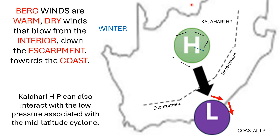So, what exactly is required for the development of bergwinds? The Kalahari High Pressure needs to be present over the interior of the country, and there needs to be a coastal low along the coastline of South Africa. As the wind moves under the influence of the pressure gradient force from the high over the interior to the low pressure along the coast, it is forced to go across the mountains and down the escarpment. It is this moving down the escarpment that causes the air to warm up.